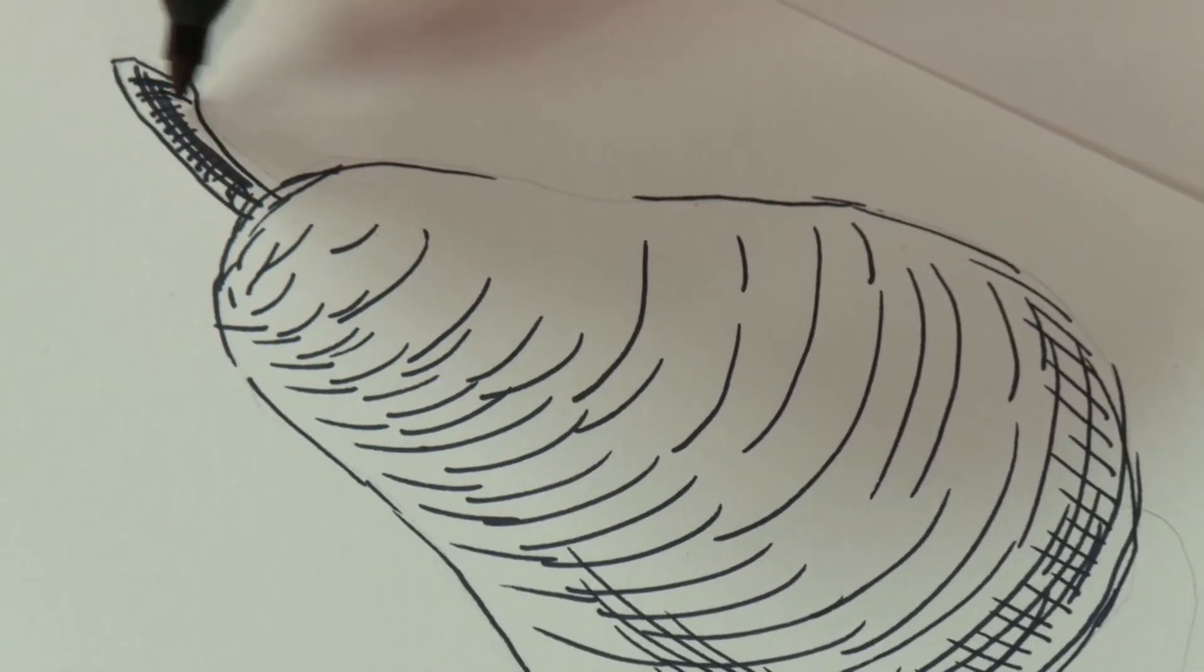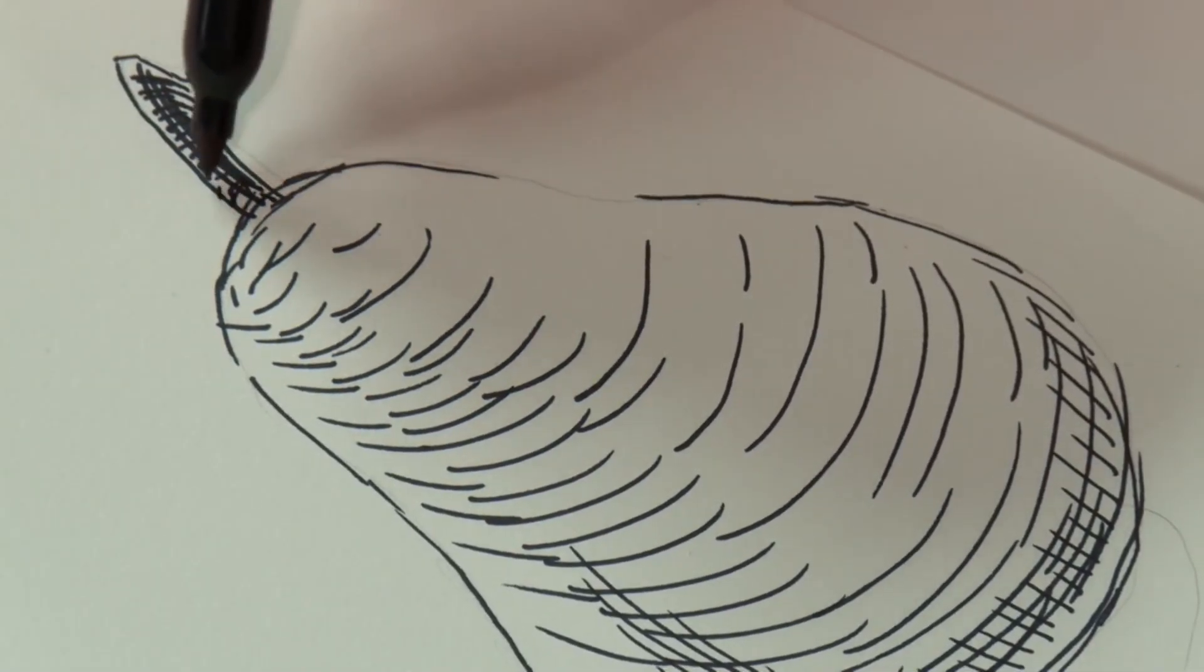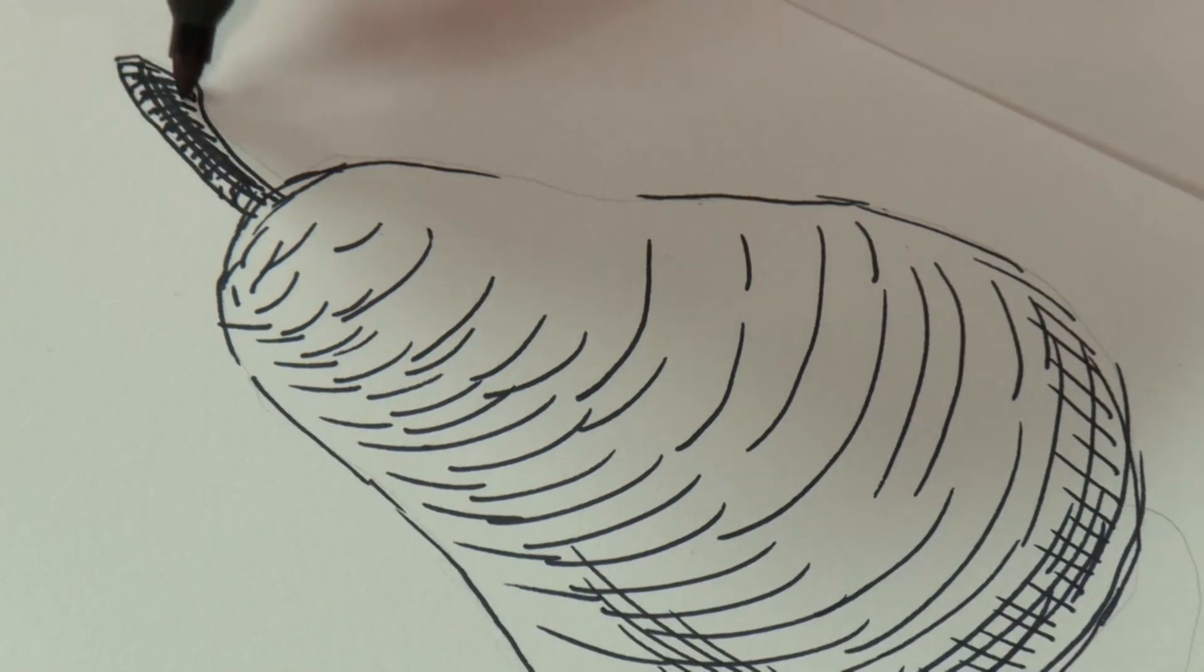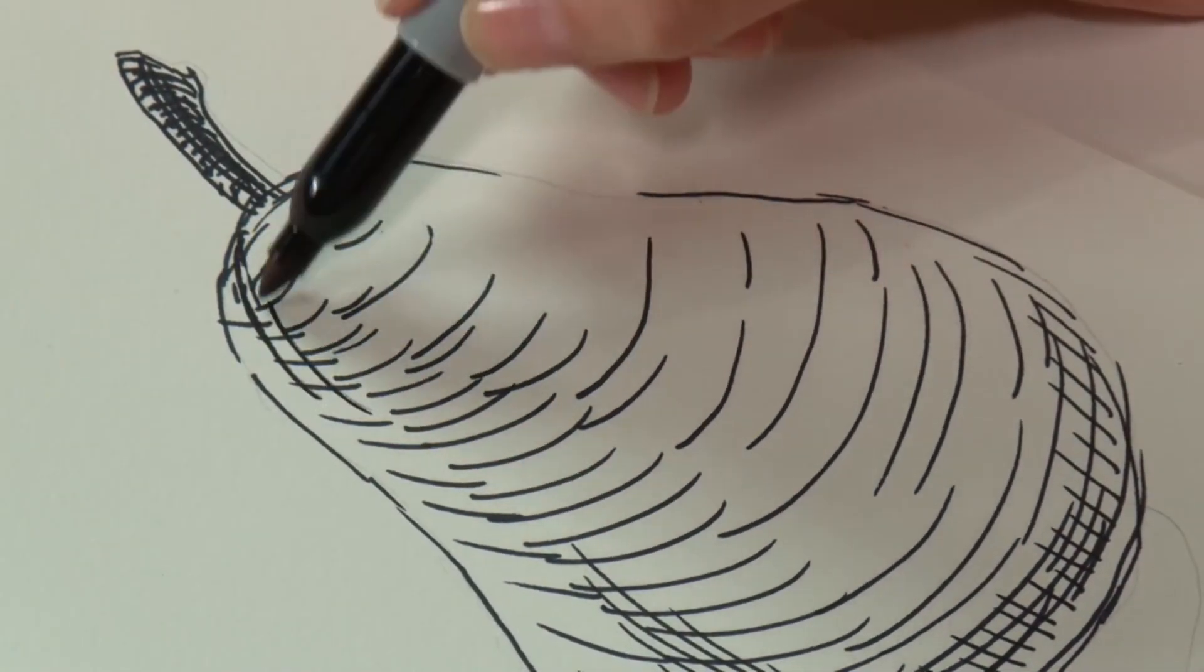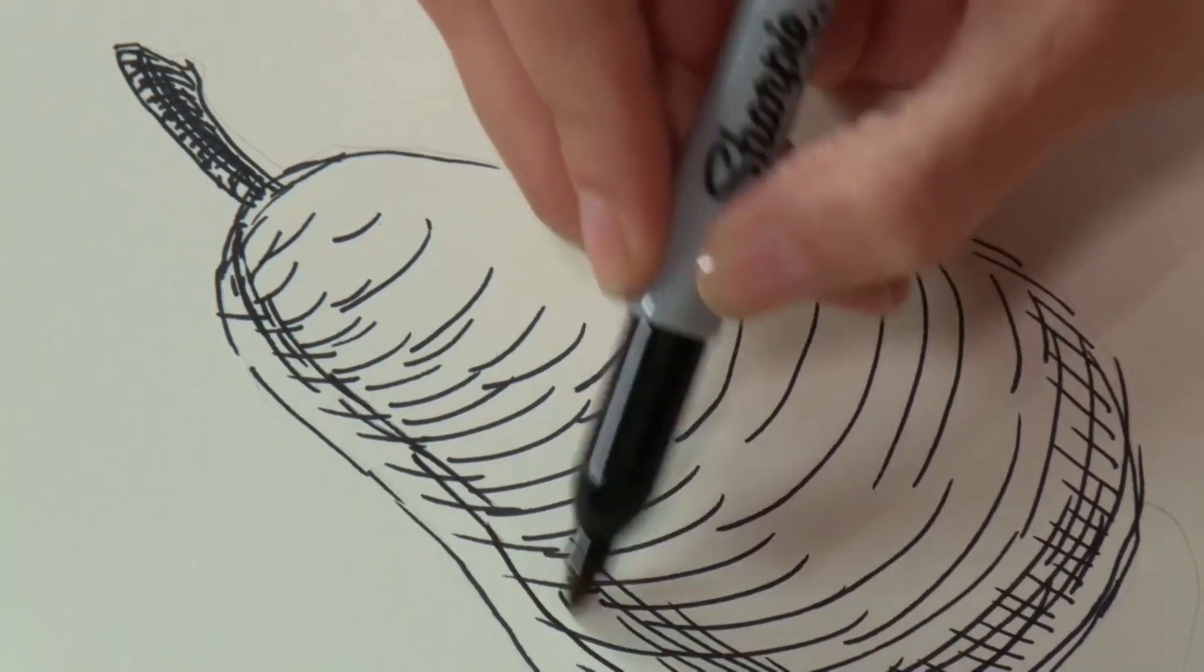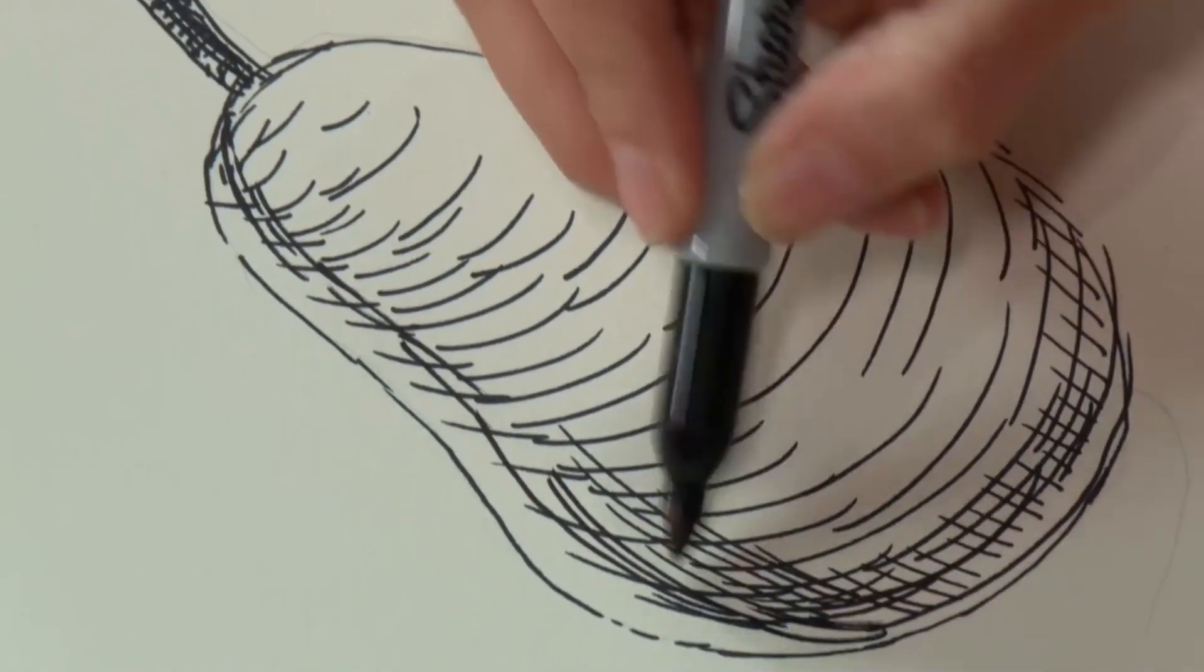On the stem, it's very dark, so I'll use some cross hatching and then just bring the edges out so there's not a lot of white there with some extra line. Then following along the cross contours of the shape so we can see all that definition.